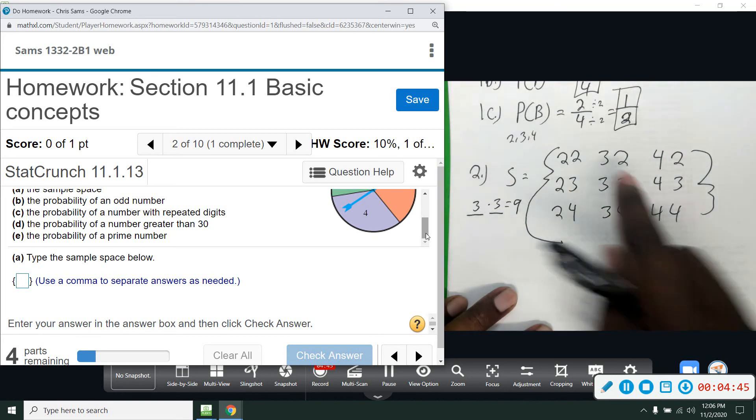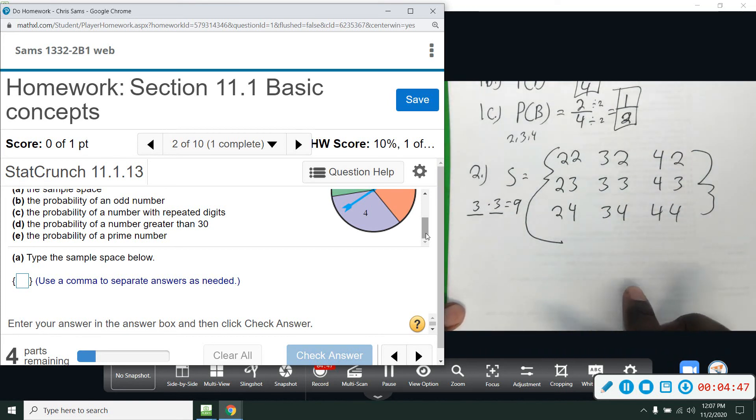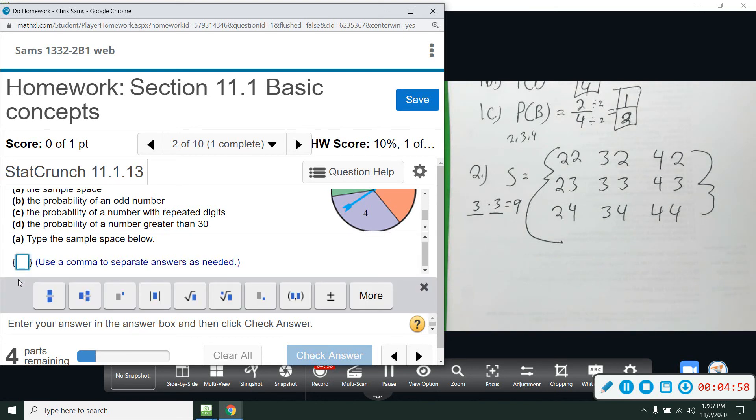So A, we want to know the sample space, so we have to type all of this in. I want to make sure you understand what's going on in the scenario. So I'm going to do 22, 23, 24, 32, 33, 34, 42 - oh go back - 42, 43, 44. All right, so that is our sample space.